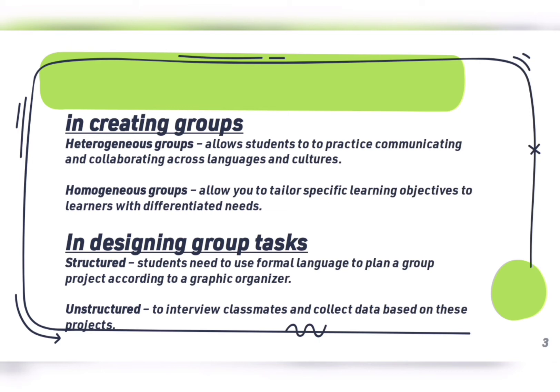In designing group tasks, there are two ways to provide tasks for students. The first is structured: students use formal language to plan a group project according to a graphic organizer, learning how to organize their words in a formal way. In unstructured tasks, students interview classmates and collect data based on projects, and the language may not be formally organized because students are given the chance to finish the project in their own way.